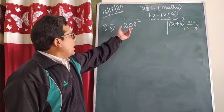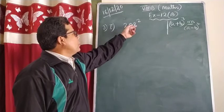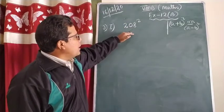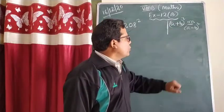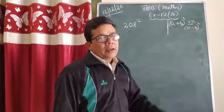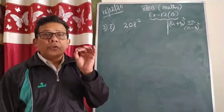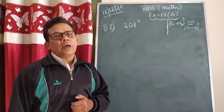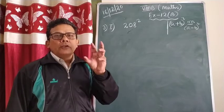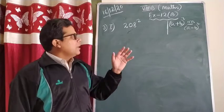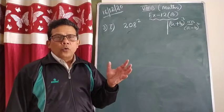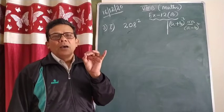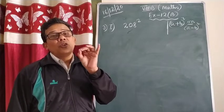So today a question is given to you: 208 squared. Whenever you are going to solve it, you have to break it into the formula of (a+b)² or (a-b)² without changing the value. When this kind of problem comes, always try to take the number whose unit place should be zero — at least the bigger number whose unit place should be zero.